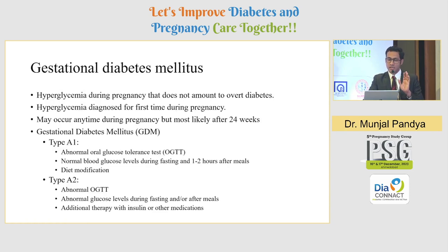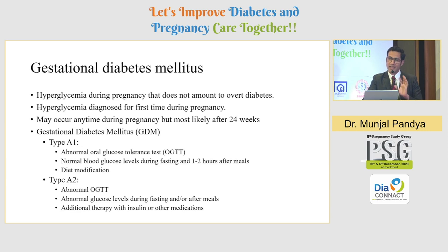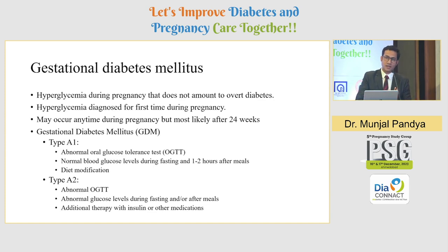Gestational diabetes is diagnosed after 24 weeks of gestation for the first time — meaning sugar levels were normal before 24 weeks. We need to exclude the possibility of pre-existing diabetes, which is why we screen all females as soon as possible in pregnancy. GDM has two types: Type A1 has abnormal OGTT but normal fasting and postprandial glucose, where diet modification is sufficient. Type A2 has abnormal OGTT and abnormal glucose levels, requiring added insulin and medical therapy.